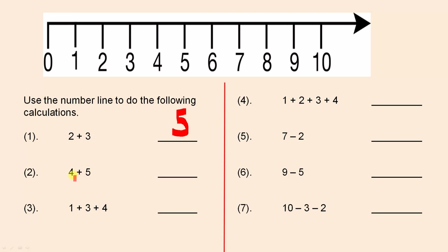Let's try this one: four plus five. So four is the first number — place your pencil on the four. Now we look at the next number which is five and we count to the right five places: one, two, three, four, five. We've landed on the nine, so the answer is nine.